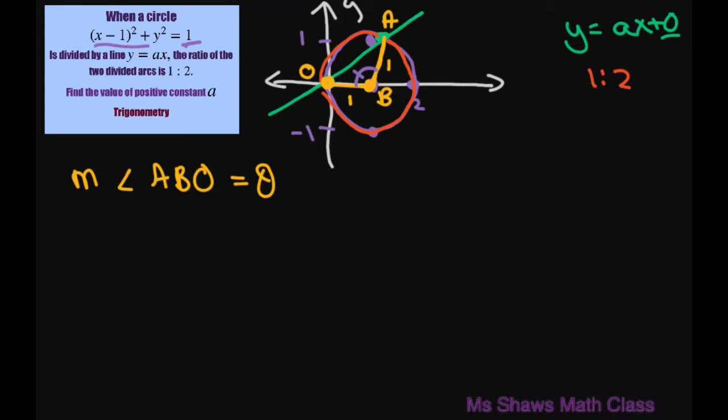Now the length of arc OA is one-third, because that's 1/3 × 2π × 1, and that's going to equal 1 × θ. So this gives me θ = 2π/3.